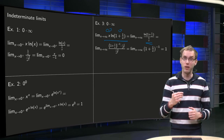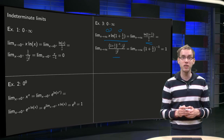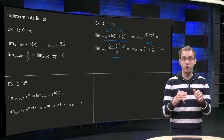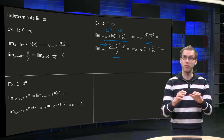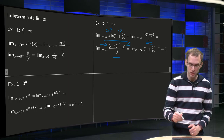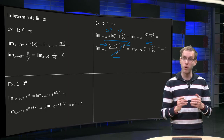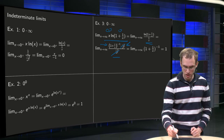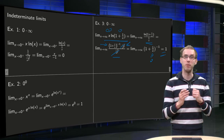Applying L'Hôpital's Rule: the derivative of 1/x in the denominator equals -1/x². For the numerator, the derivative of ln(1 + 1/x) equals 1 over (1 + 1/x), times the chain rule factor -1/x². Those -1/x² factors cancel out, leaving us with the limit as x→∞ of (1 + 1/x)^(-1). Taking the limit, 1/x goes to 0, so we get (1 + 0)^(-1) equals 1.